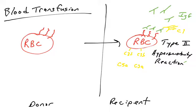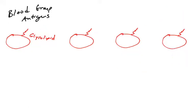So how do we avoid rejection of blood during blood transfusion? This involves knowledge of the blood group antigens — specifically molecules on the surface of red blood cells. These are specific glycolipids found on the surface of red blood cells. A glycolipid is a lipid embedded in the membrane of the red blood cell with carbohydrate sugars attached on the surface.